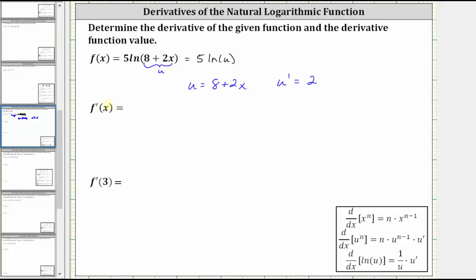And now we can find the derivative. The derivative of five natural log u with respect to x is equal to five times one over u times u prime, which means f prime of x is equal to five times one divided by the quantity eight plus two x times two.